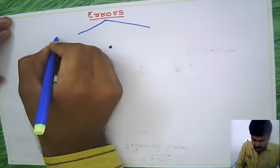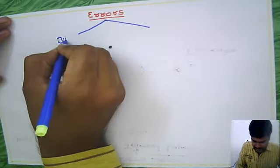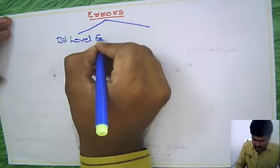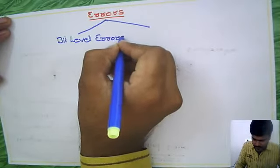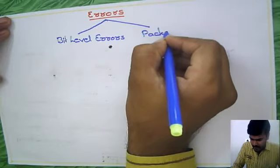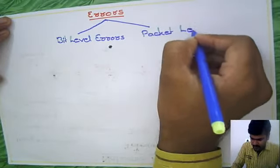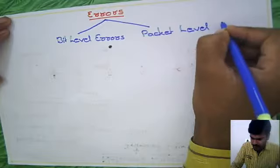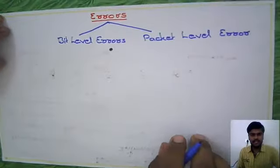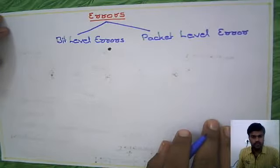One is bit level errors, and the next one is packet level errors. These are the two types of errors which are possible.